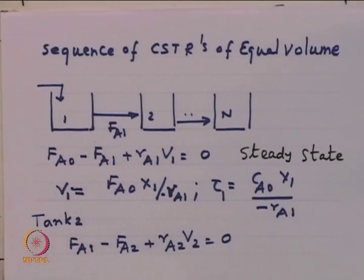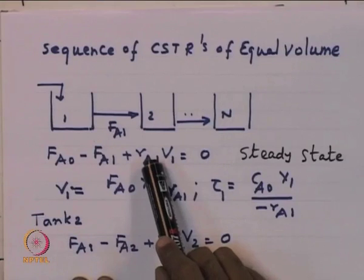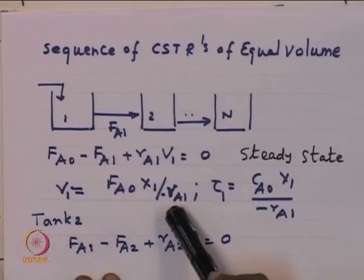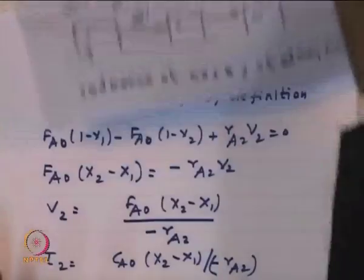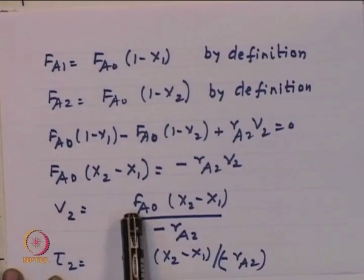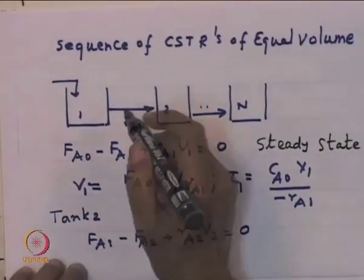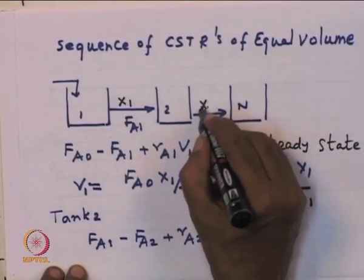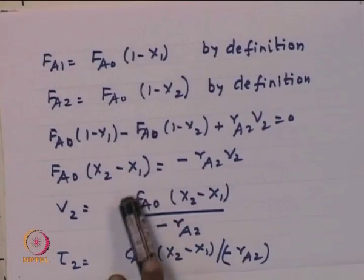In the process industry there are situations where you may need not one stirred tank but many stirred tanks in sequence. For tank 1: V_1 = F_A0·X_1/(−R_A1), or in terms of residence time τ_1 = C_A0·X_1/(−R_A1). For tank 2, writing the material balance F_A1 − F_A2 + R_A2·V_2 = 0: V_2 = F_A0·(X_2 − X_1)/(−R_A2). The size of tank 2 depends on the moles of A reacted in tank 2 divided by the rate of conversion in tank 2.